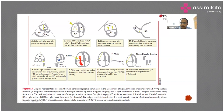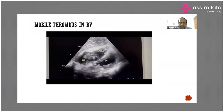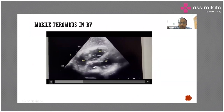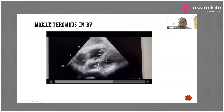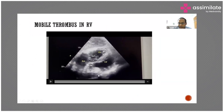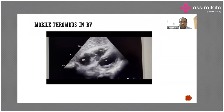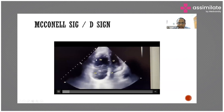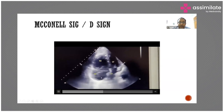This echocardiogram shows a mobile thrombus in the right ventricle and right atrium, moving from the right ventricle to the right atrium — this is diagnostic of pulmonary embolism. In such a hemodynamically unstable patient, we can straight away thrombolyze without needing a CT pulmonary angiogram. McConnell's sign: the RV free wall is not moving but the RV apex is contracting well — this is specific for pulmonary embolism.